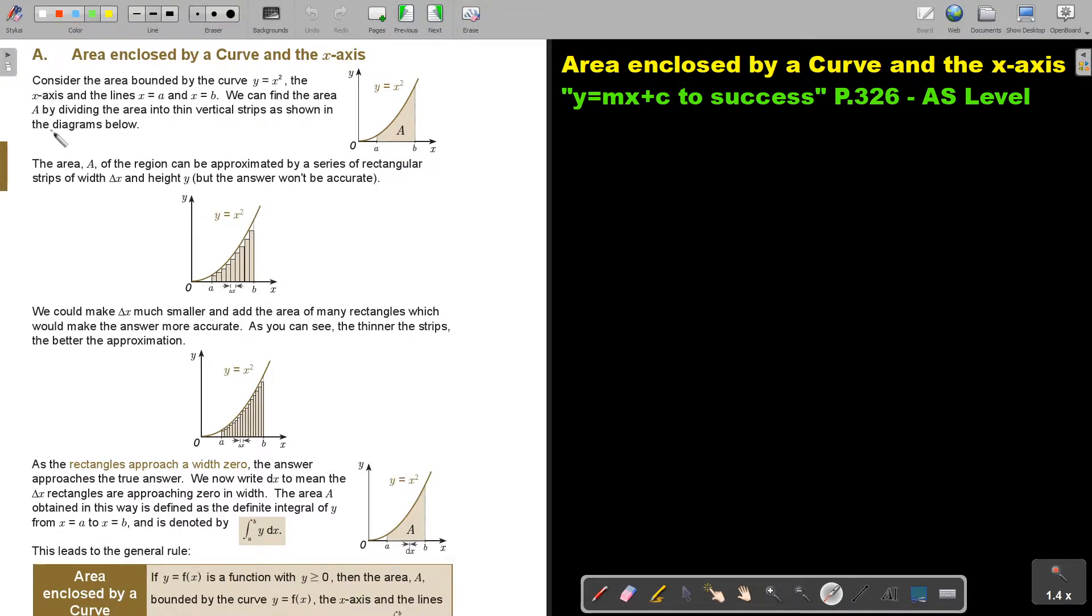We can find the area A by dividing the area into thin vertical strips as shown in the diagrams below. The area A of the region can be approximated by a series of rectangular strips of width delta x. That width is delta x, and height H.